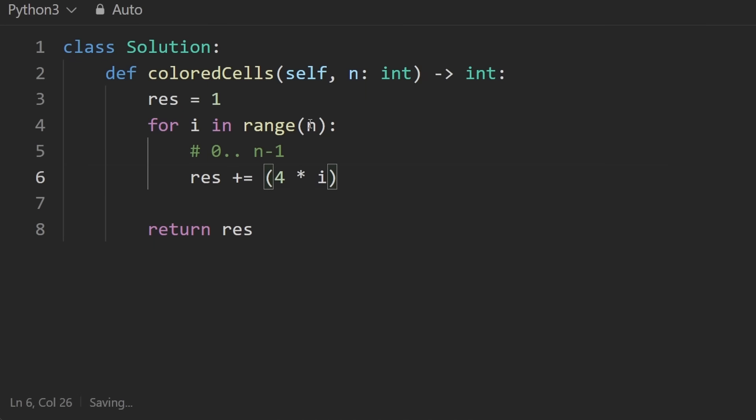So what that's going to do is let's say n is equal to one, this loop is going to run a single time, it's going to add four times zero to this. So nothing's going to happen. It's just going to return one.